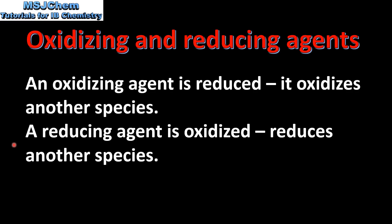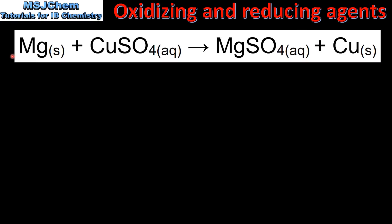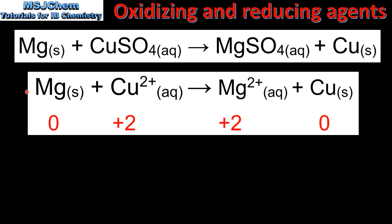Next we'll have a look at some examples. In this redox reaction magnesium reacts with aqueous copper sulfate to form magnesium sulfate and copper. Here we have the net ionic equation for the reaction. The oxidation state of the magnesium is 0 because it's an element. The oxidation state of the copper 2+ ion is +2. The oxidation state of the magnesium 2+ ion is +2, and the oxidation state of the copper is 0 because it's an element.